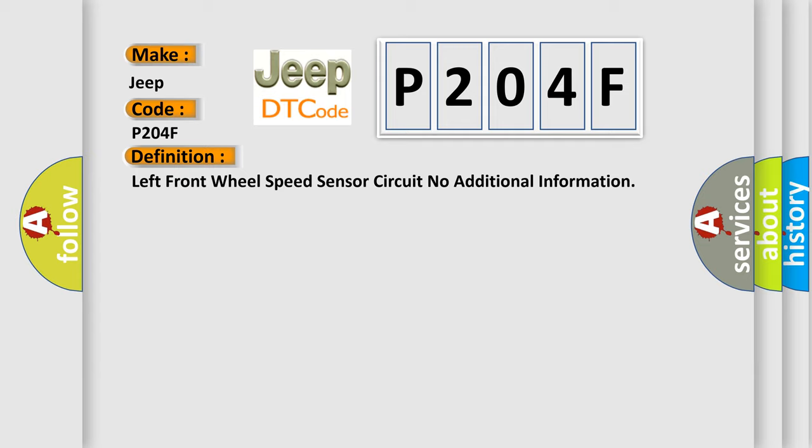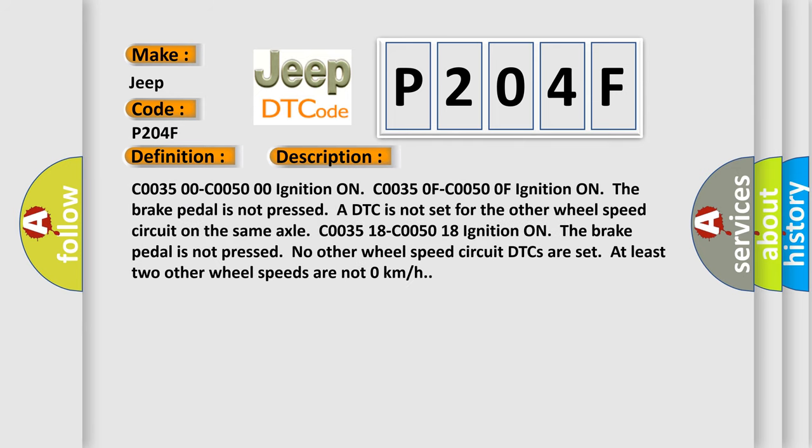And now this is a short description of this DTC code. C0035 00 C0050 00 ignition ON, C0035 0F C0050 0F ignition ON. The brake pedal is not pressed. A DTC is not set for the other wheel speed circuit on the same axle.